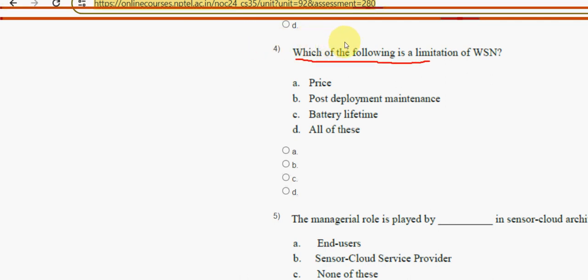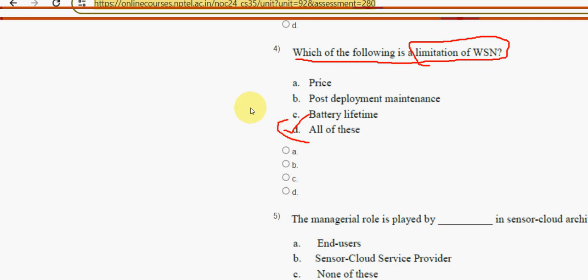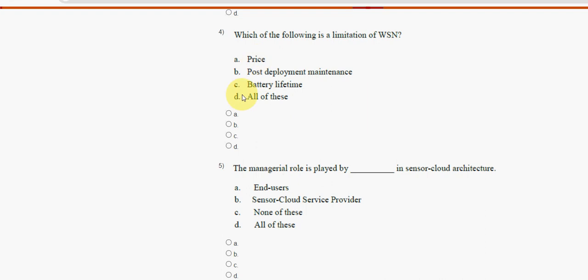Fourth question: which of the following is a limitation of WSN? The answer is option D — all of the above. Mark option D as the correct answer.